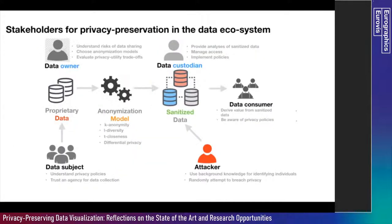If we look at the data ecosystem and try to understand privacy — sometimes we can think of privacy as a very unidimensional concept where people's data is shared in a way that we protect privacy, but there are multiple stakeholders involved. There are data owners or data custodians who collect and manage data. Proprietary data is converted to sanitized data using anonymization models, and data owners and custodians really want to understand the trade-offs between risks and utility when data is anonymized and when there is a reduction in value in that anonymized dataset.